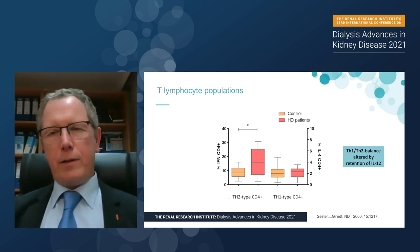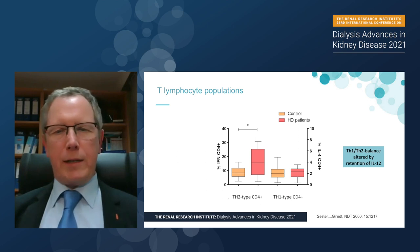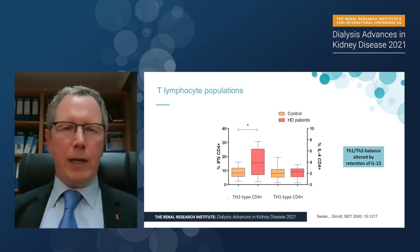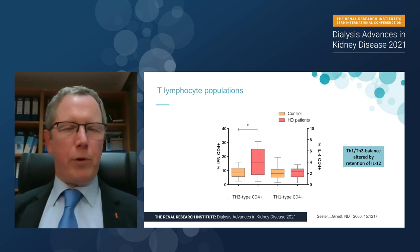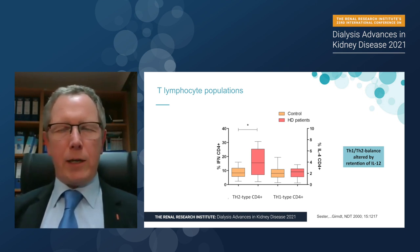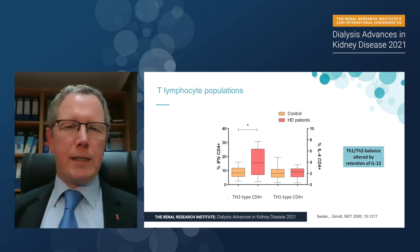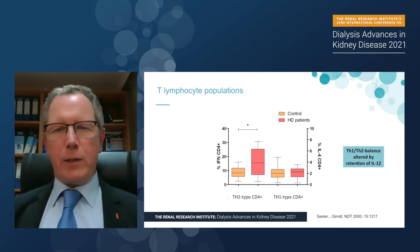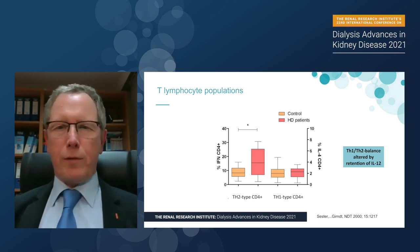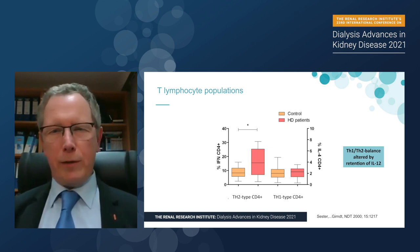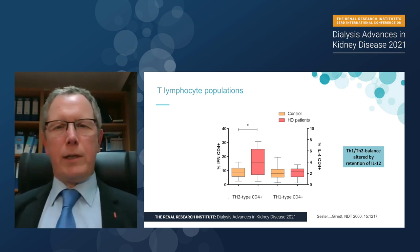For instance, years ago we looked at the TH1/TH2 differentiation pattern in lymphocytes of hemodialysis patients. You can see that the TH2 population is expanded while the TH1 population is not. This leads to an alteration in the balance between TH1 and TH2 in these patients. The cause we could clearly show was the high expression of pro-inflammatory IL-12, a typical hallmark of chronic renal failure. And if you inhibit IL-12, you get normal T cell differentiation.